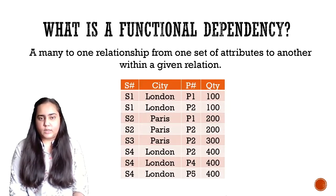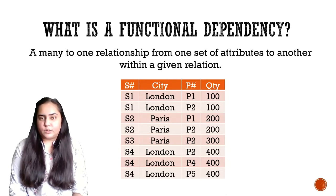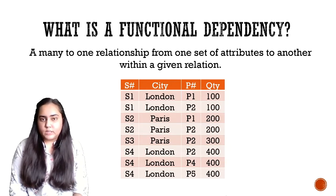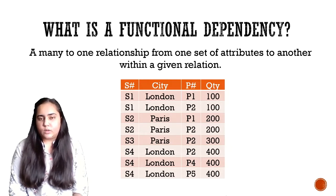Take a look at this table here. It contains four columns: S#, city, P#, and quantity. S# stands for the supplier number — this is a small sample table from a database for auto parts supply. City is where the supplier is located, P# is the part number the supplier is selling, and quantity is the number of parts of that type sold by the supplier. There are several suppliers — S1, S2, S3, and S4 — based in different cities and selling different types of parts in different quantities.